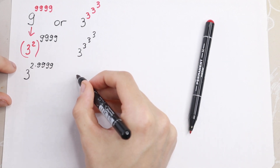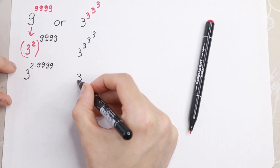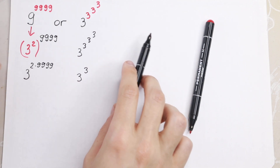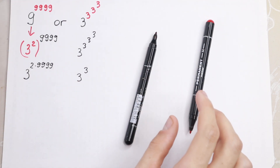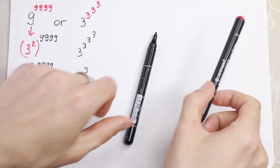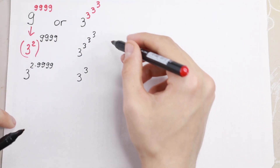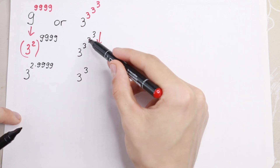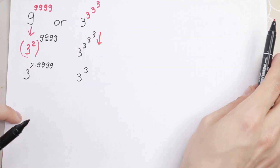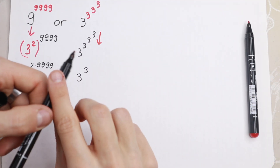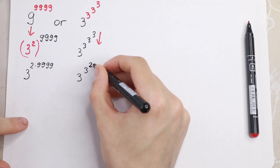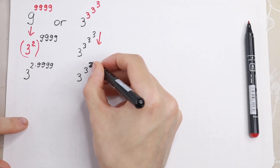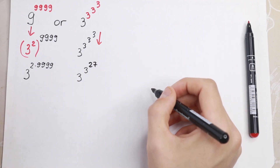And on the right we will have 3 to the power 3^(3^3). We need to know the rule: if we have a tower of powers, we evaluate from the top to the bottom. So 3^3 equals 27, and the right side simplifies to 3 to the power 3^27.